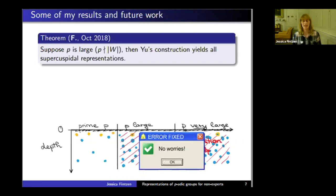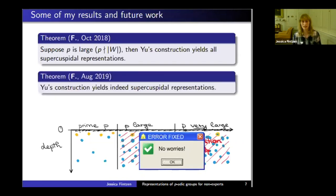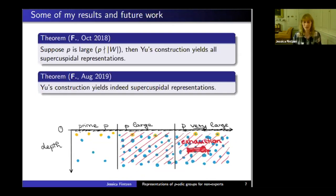Mathematicians started to get more and more worried. But luckily, I managed to prove that we don't have to worry. Yu's construction still yields supercuspidal representations. Everything is safe. All the results are still valid.